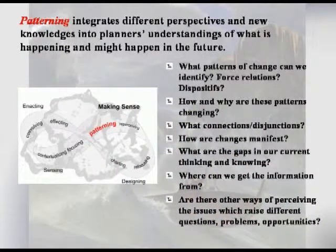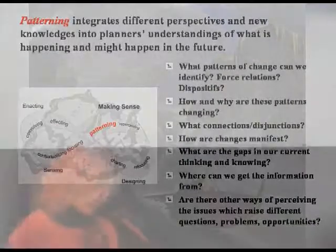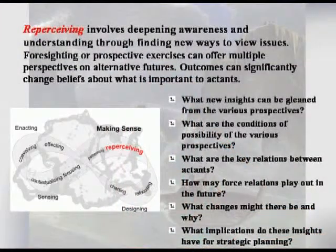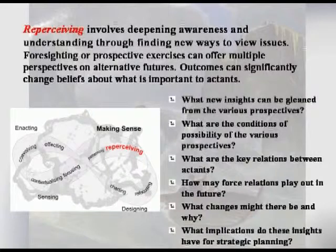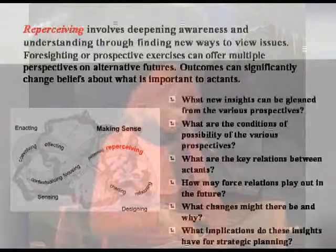Patterning integrates different perspectives and new knowledges into planners' understandings of what's happening and might happen in the future: what patterns have changed, how and why, what are the gaps in our current thinking, and are there other ways of perceiving these issues which raise different questions? Something that planners have not traditionally thought about. And then reperceiving — on the basis of the work already done, deepening awareness and understanding through finding new ways to view issues. Here, foresighting or prospective exercises can offer multiple perspectives on alternative futures — not just scenarios, but going further than that. What new insights can be gleaned from different perspectives? What might happen if? And what implications do these insights have for strategic planning? Foresighting is a process in which seemingly wacky, almost off-the-planet ideas can be put on the table — you think about what the conditions of possibility would be for that to happen, and whether those are likely.